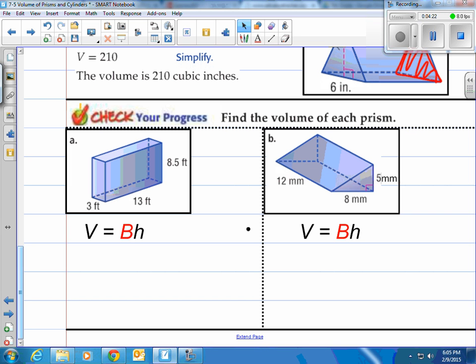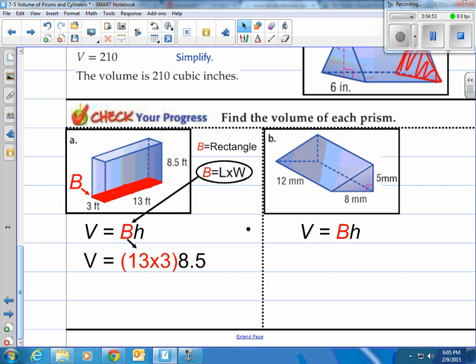You give it a shot here. Remember, determine what the base is, find its area, and then multiply by the height. For problem A, what do we do first? Well, we have to determine what the base is. The base is a rectangle. So we need to find that area. That's what that big B means, the area of the base. So we know the area of a rectangle is length times width. We take the length and the width and we multiply. That'll give us our base area. That's going to be 13 times 3.